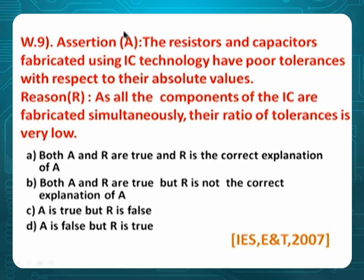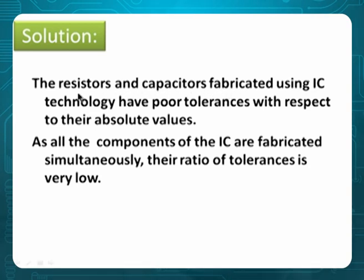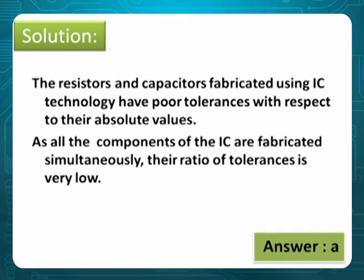Question 9 (IES, Electronics, 2010): Assert: Resistors and capacitors fabricated using IC technology have poor tolerances with respect to their absolute values. Reason: As all components of ICs are fabricated simultaneously, the ratio of tolerance is very low. Both the assertion and reason are correct and the reason correctly explains the assertion. Therefore option is A.